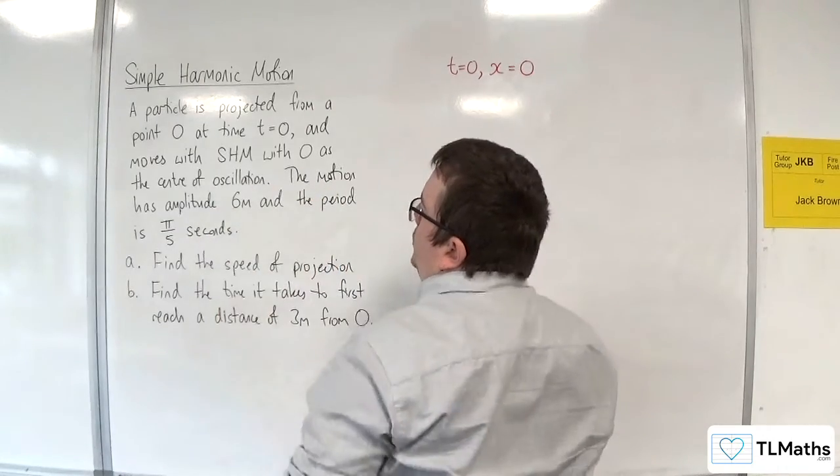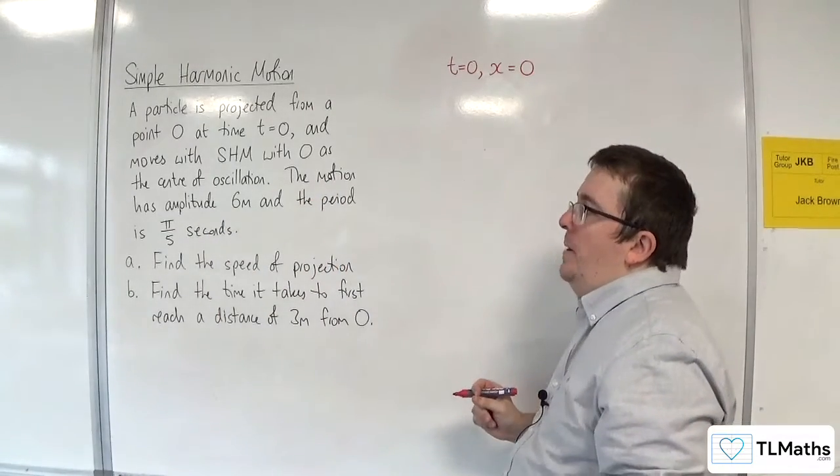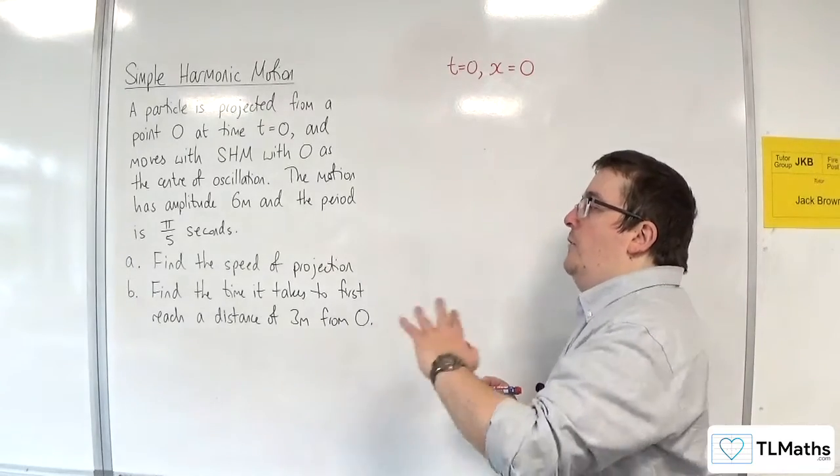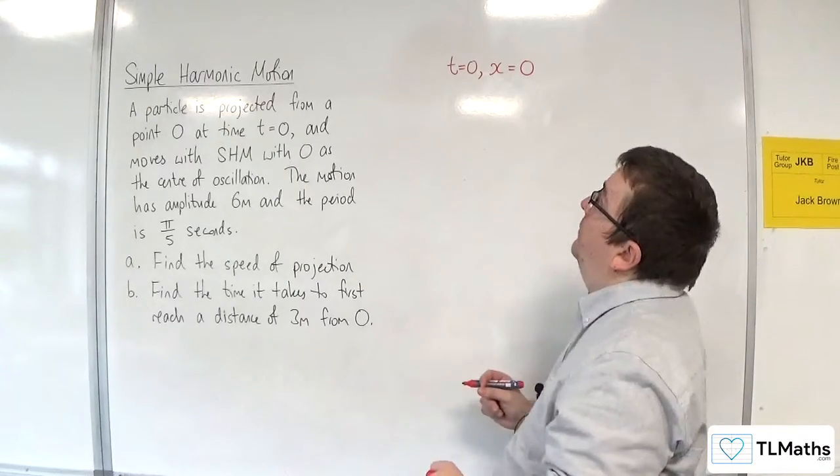The motion has amplitude 6 metres, and the period is π over 5 seconds. Part A, find the speed of projection.